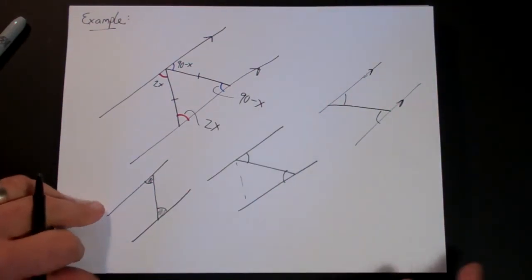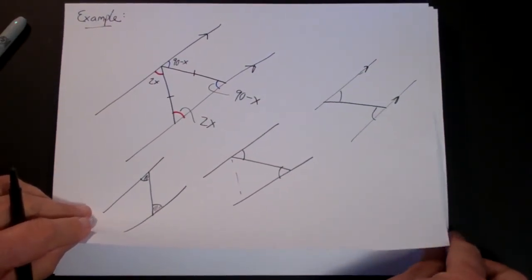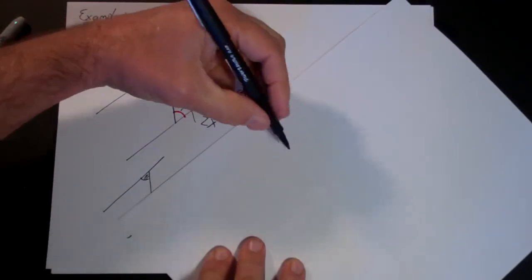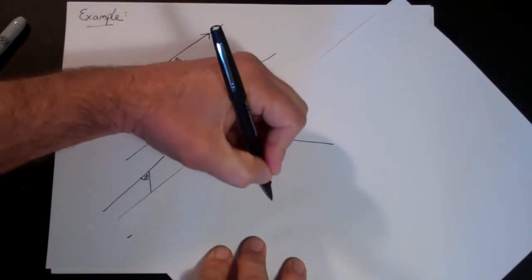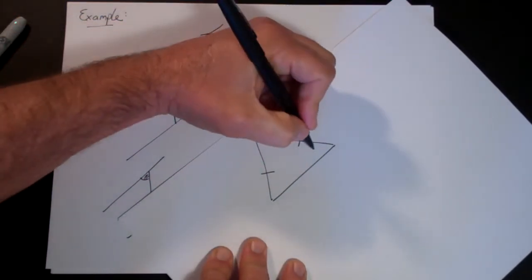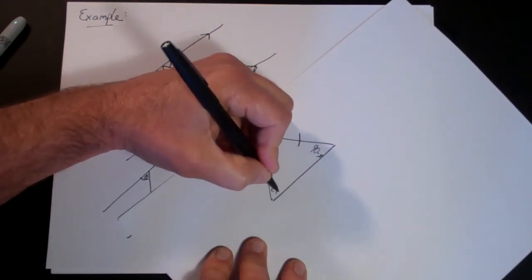At this point, if you want to, you can just draw your triangle over again or you can just read it from this. It doesn't necessarily matter. What I know here is I have a triangle. I know this side is equal to this side. I know that this is 90 minus x and this is 2x.